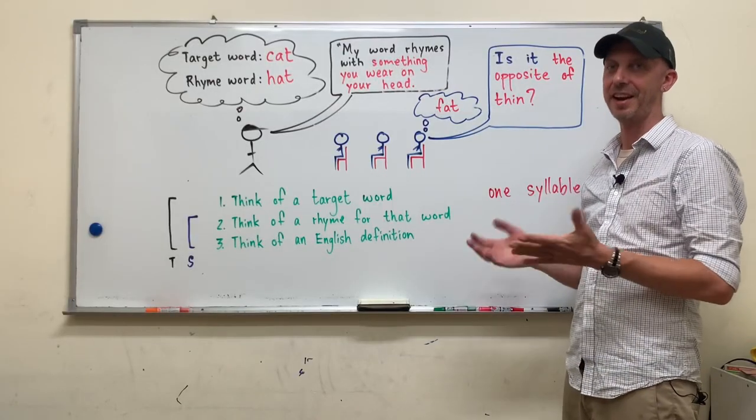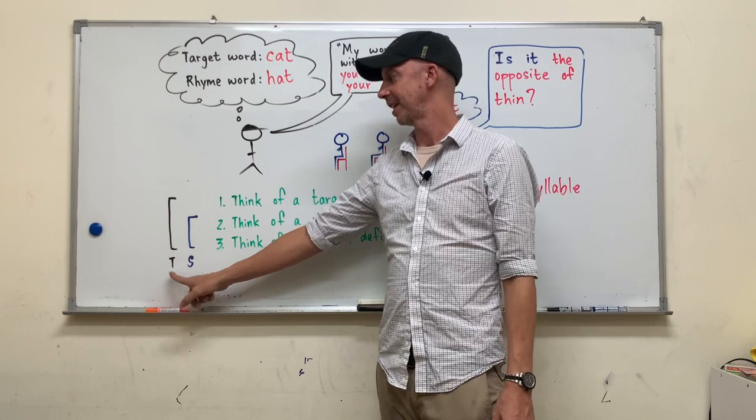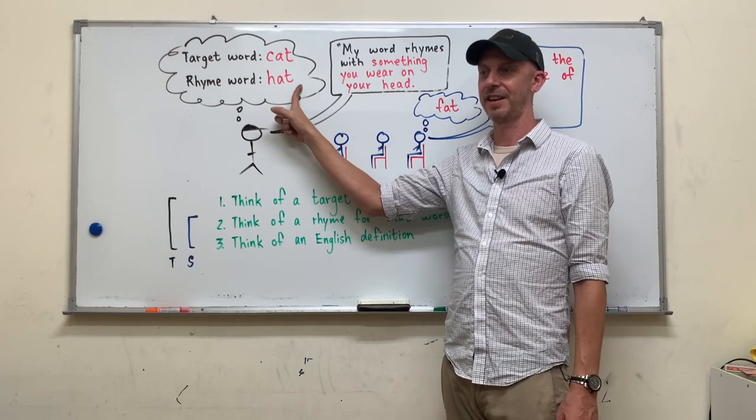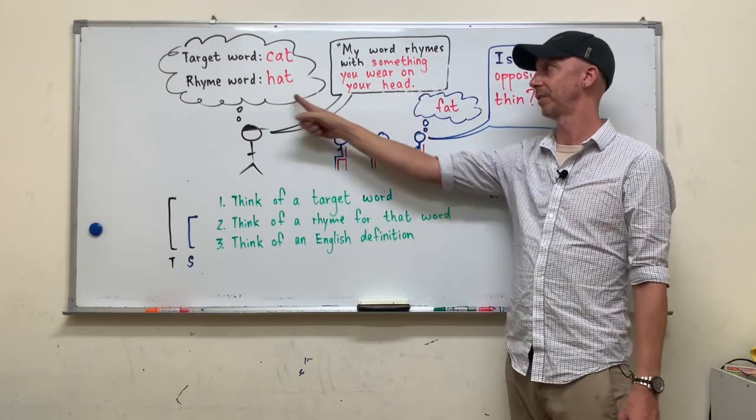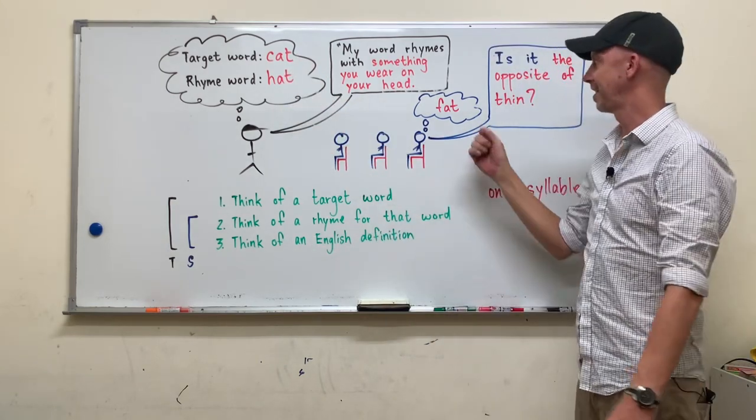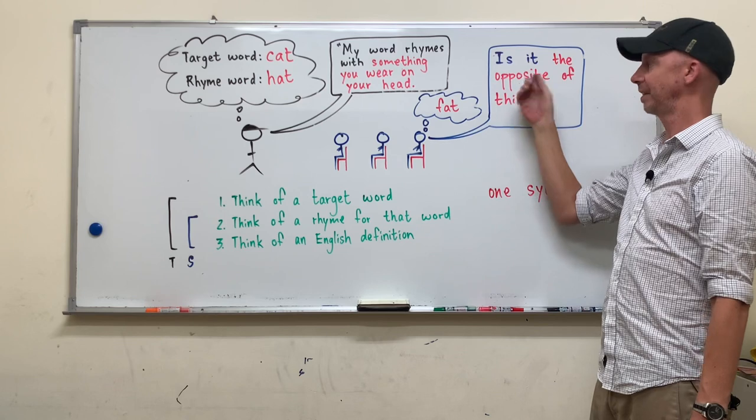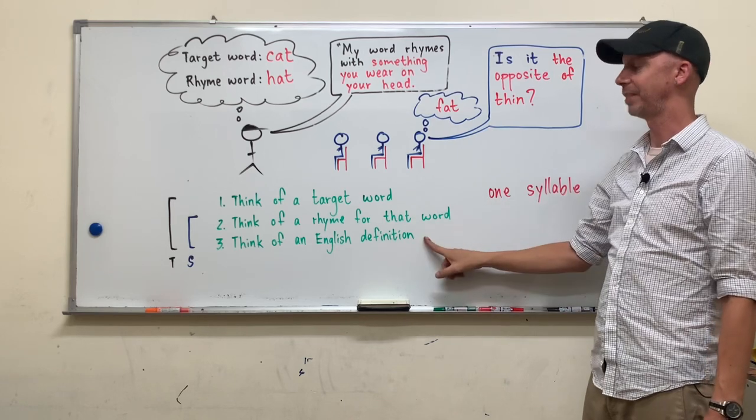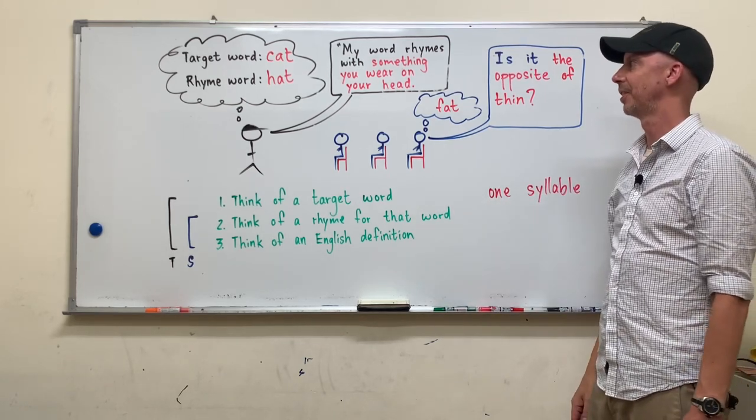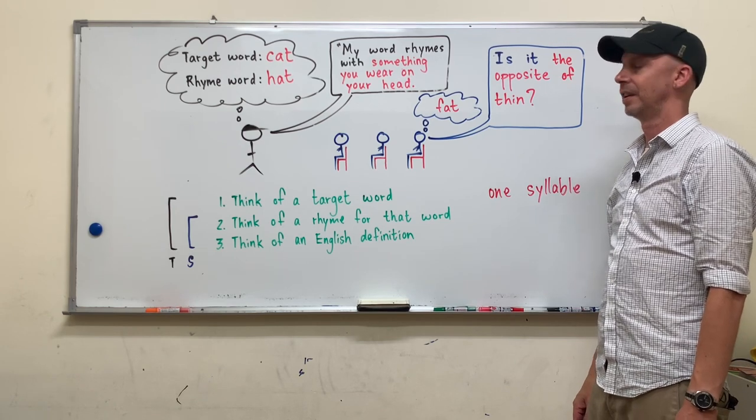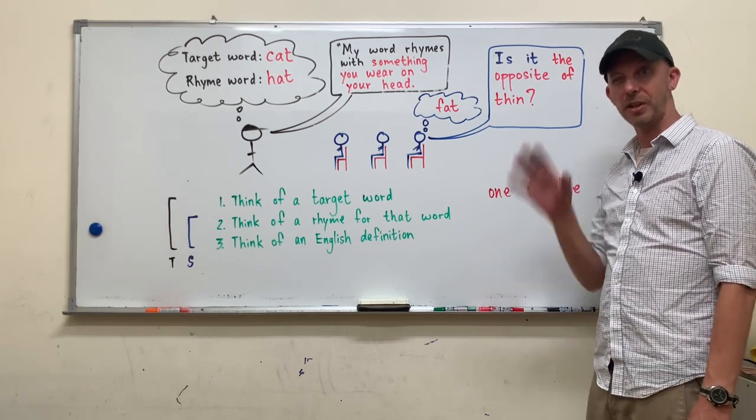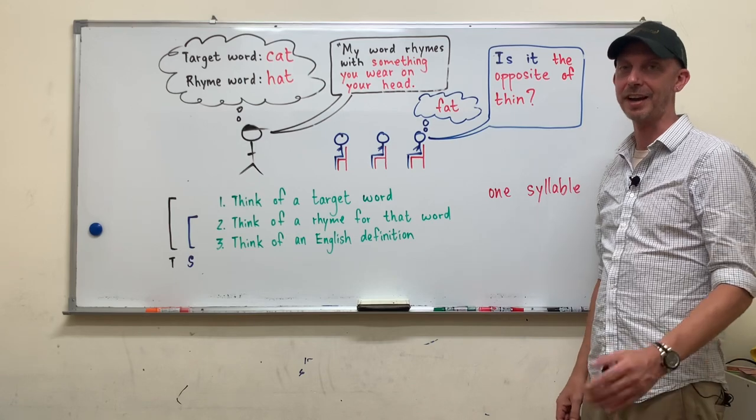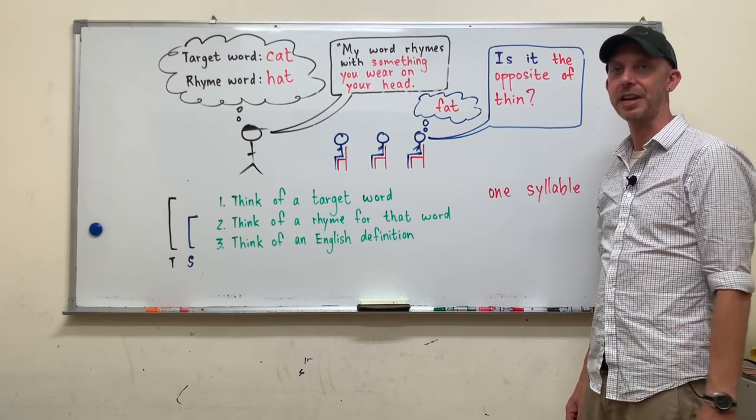So let's play one time in the comments. I will be the game master. I will think of a word. I've got one. And I'll think of a word that rhymes with that. Now I'm going to give you the English definition for the rhyming word. My word rhymes with when you close one eye, the verb for closing one eye. My word rhymes with that word. So good luck. I hope you enjoy this game and we'll see you next week. Bye-bye.